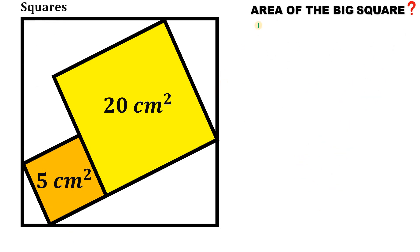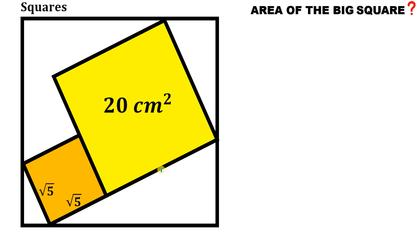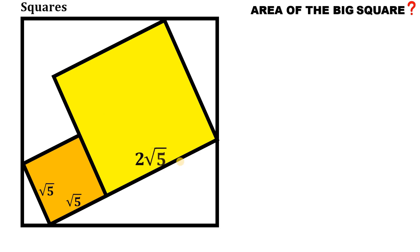All right. So given this figure, the goal is to find the area of the big square. Here's the solution. The area of this orange square is 5 square centimeters, so the length of the side of this square is simply equal to the square root of 5 centimeters. And also, the length of the side of this yellow square is the square root of 20 centimeters. And 20 is just 4 times 5, so we can simplify square root of 20 as 2 times square root of 5.